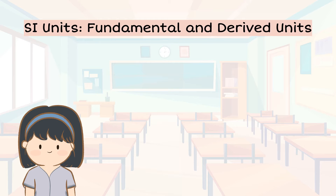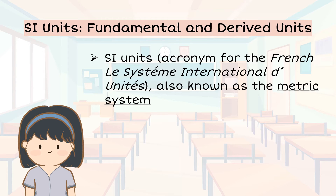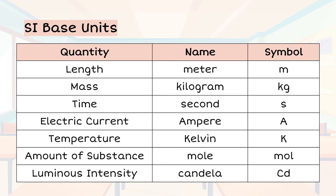First things first, what are SI Units? SI Units are the standard units of measurement used in physics and most scientific disciplines. They provide a consistent and globally accepted system for expressing physical quantities. Here are some SI Units we'll be working with today. These seven fundamental SI Units can be combined to express various other quantities.